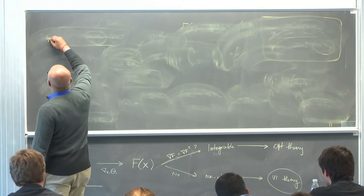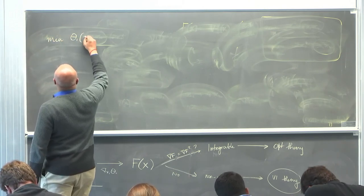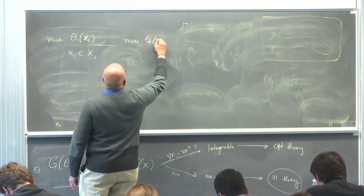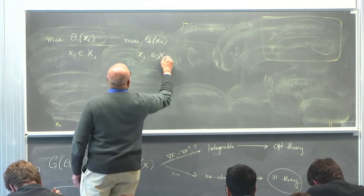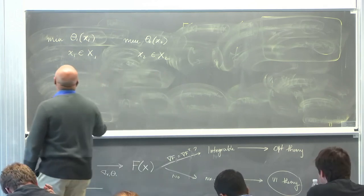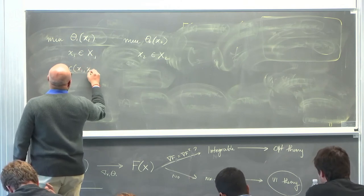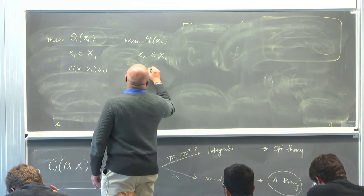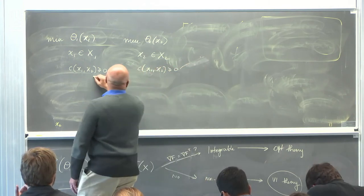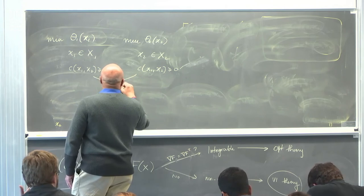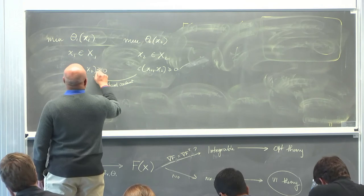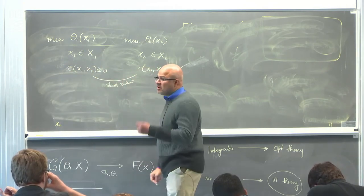So suppose I gave you this problem. We had theta1 of x1, and player 2's objective, and so on—that was the type of problem we looked at. Suppose I make one change and add C of x1, x2 less than or equal to 0. This is called a shared constraint.